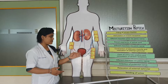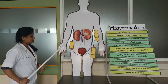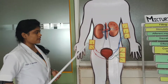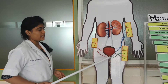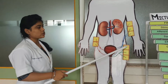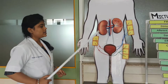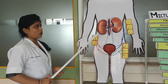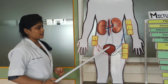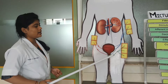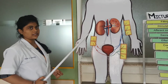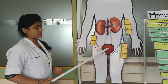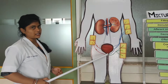Regarding nerve supply to the urinary bladder and the sphincter: sympathetic nerve fibres and parasympathetic nerve fibres of the autonomic nervous system supply the urinary bladder and the internal sphincter. Sympathetic nerve fibres arise from the first two lumbar segments of the spinal cord and they supply the urinary bladder, the detrusor muscle of the urinary bladder, and the internal sphincter.